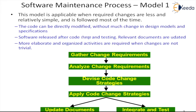Process model one is applicable when required changes are relatively less and simple. It is the most commonly used model because most of the time we do small, minor changes. In this case, most of the time we don't even need to do reverse engineering or modify the design — the code can be directly modified.